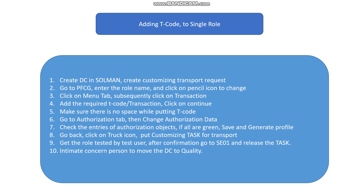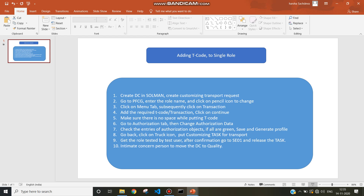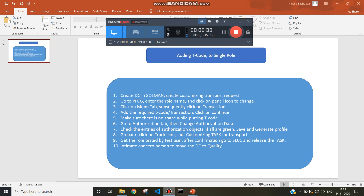Hope this helps you understand how to add a T-code into the single role. In this process, only a customizing transport request is required — a workbench transport is not required. Thank you for watching, and hope this will help.